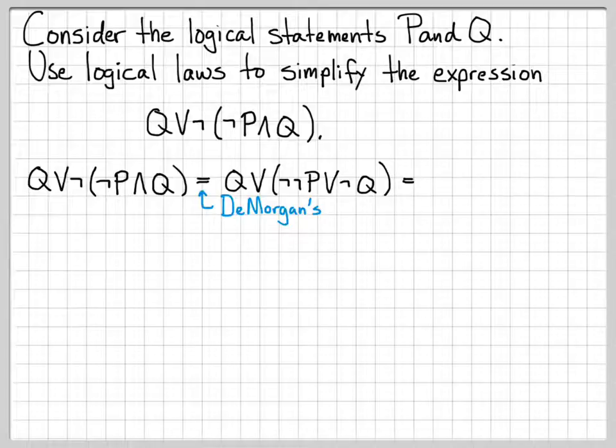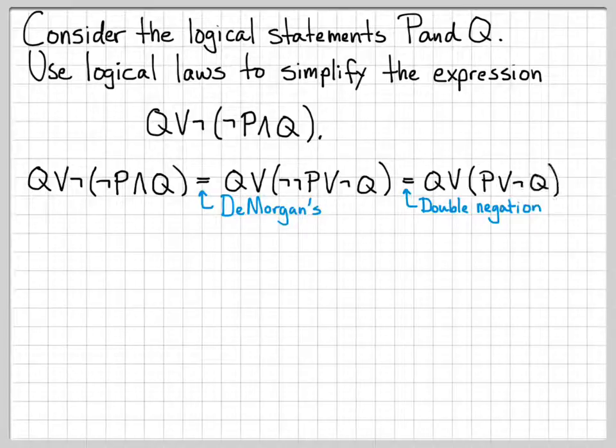The next thing that we should do, which is obvious after you have a little practice with this, is to use the double negation law. The double negation law says that not not P is equivalent to P. So this is just equal to Q or quantity, P or not Q. So we apply the double negation law.